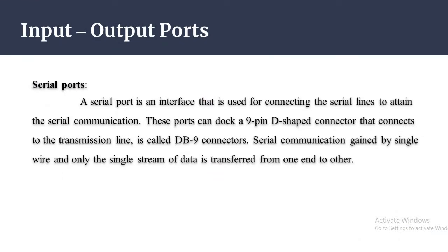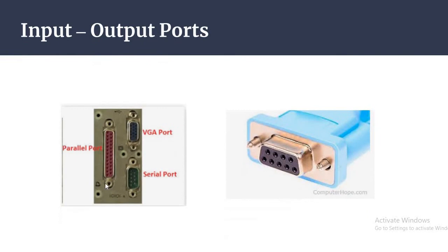Then serial ports. Serial ports are used to connect serial lines for serial communication. The serial port uses a 9-pin D-shaped connector. We use a USB cable or serial port cable to connect to the serial port on the computer.